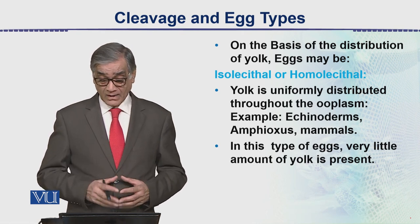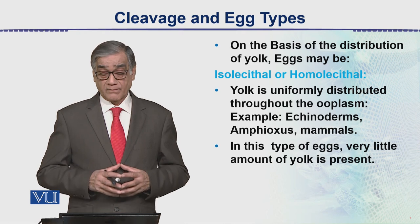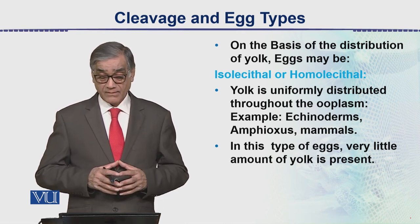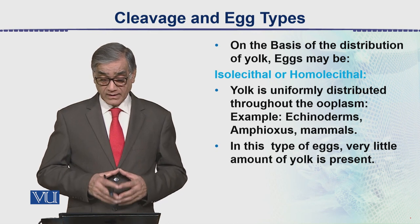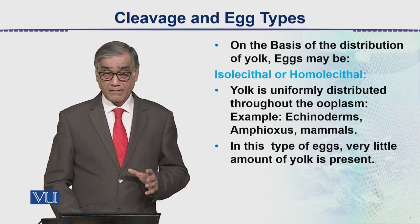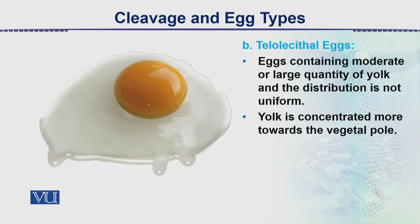There are also isolecithal or homolecithal eggs — examples include Amphioxus, mammals, and echinoderms. In this case, very little amount of yolk is present and it is distributed evenly. There is another type called the telolecithal egg, which is classified differently. This covers all the major egg types based on yolk amount and distribution.